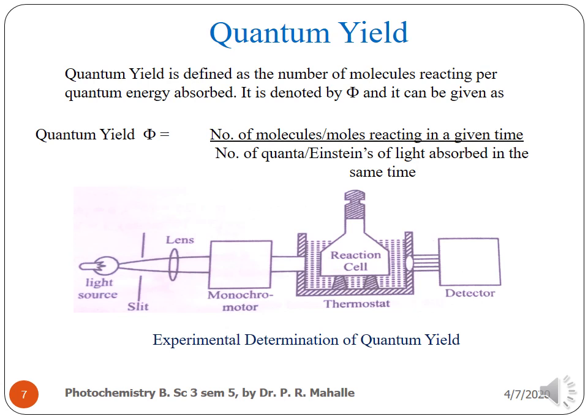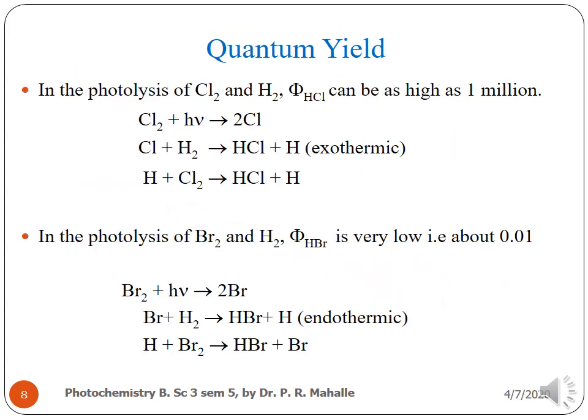The diagram represents the experimental determination of quantum yield. Example 1: In the photolysis of chlorine and hydrogen, φ can be as high as 1 million and the reaction is endothermic. Example 2: In the photolysis of bromine and hydrogen, the quantum yield φ is very low, about 0.01, and the reaction is also endothermic.